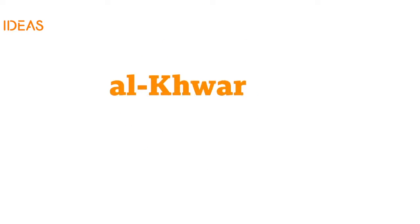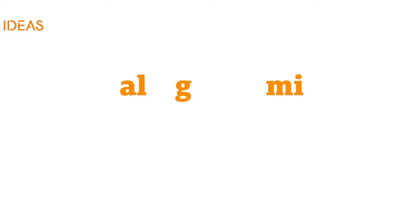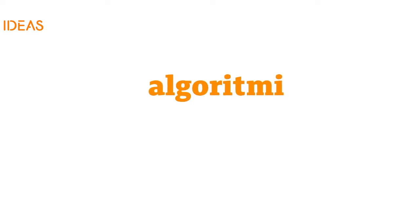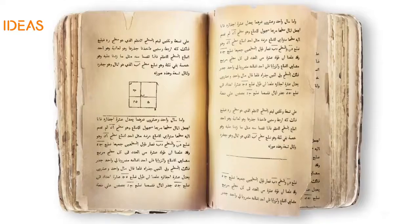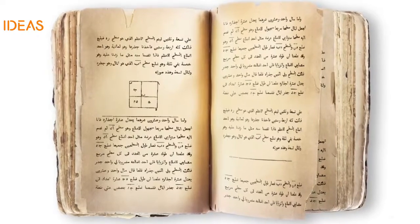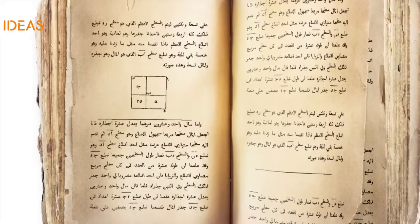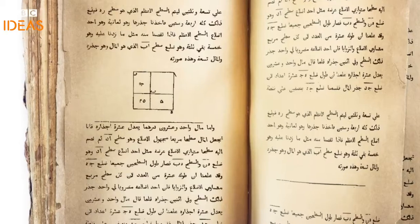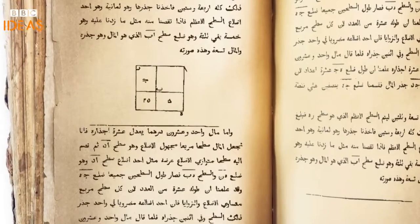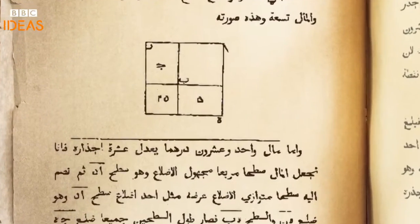Al-Khawarizmi's name, when Latinised in the title of the book, became Al-Ghawarizmi, Al-Khawarizmi, and this is the origin of the word algorithm. We also have al-Khawarizmi to thank for the word algebra, which comes from another of his works.